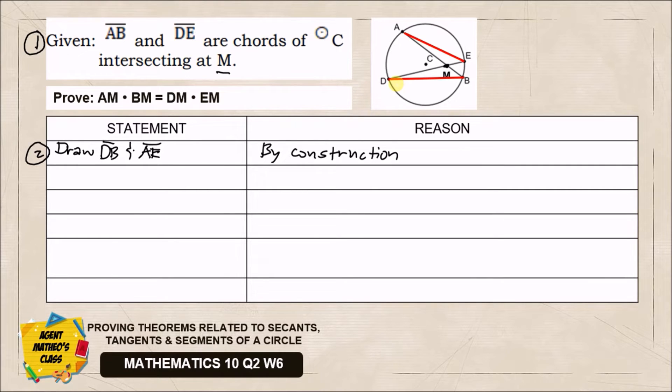Our third statement: the measure of angle BAE equals the measure of angle EDB. Using tick marks, these are equal. What would be the reason? Look at our drawing - why are they equal? Based on our previous lesson, they're equal because of this intercepted arc. According to the rule, inscribed angles which intercept the same arc are always equal.